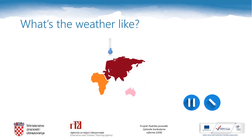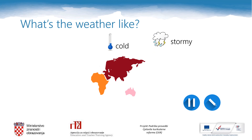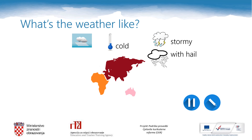In the north of Asia, the weather can be cold. It can be stormy, or stormy with hail. It can be foggy as well.